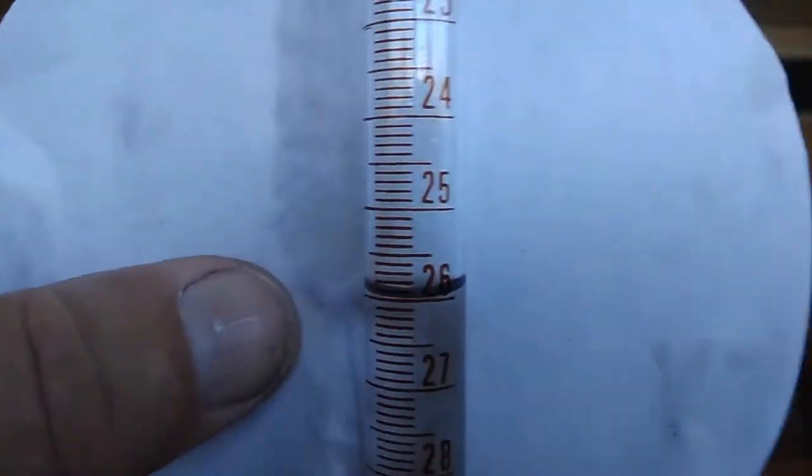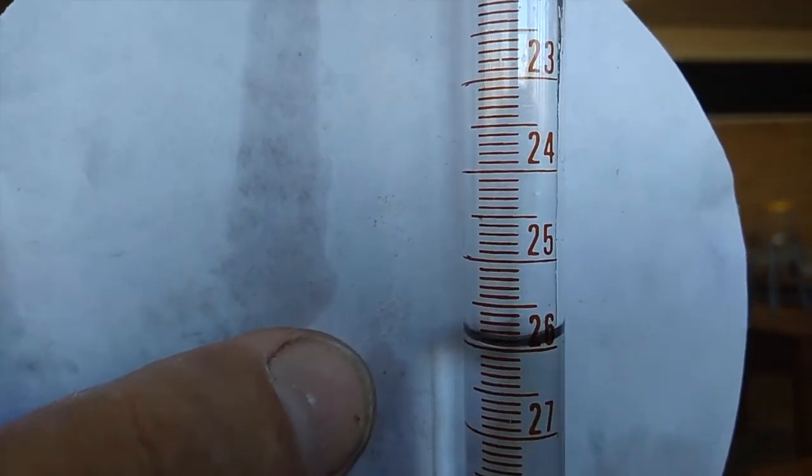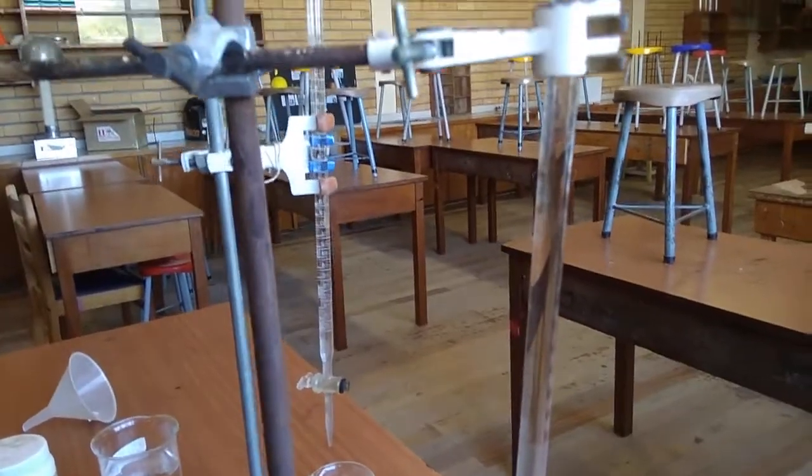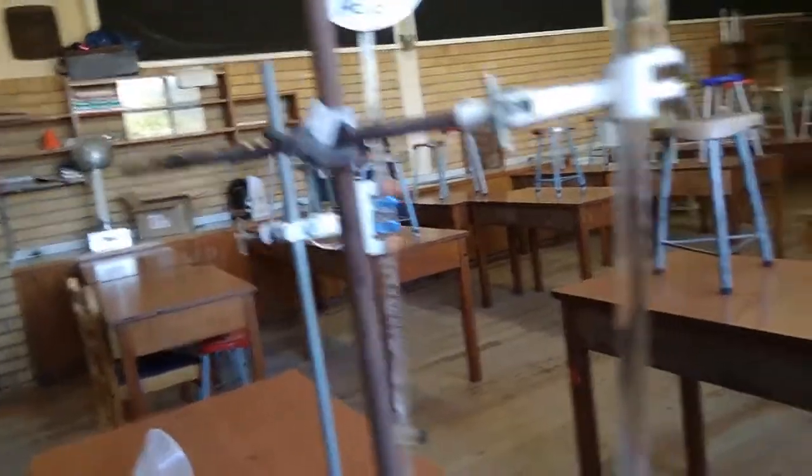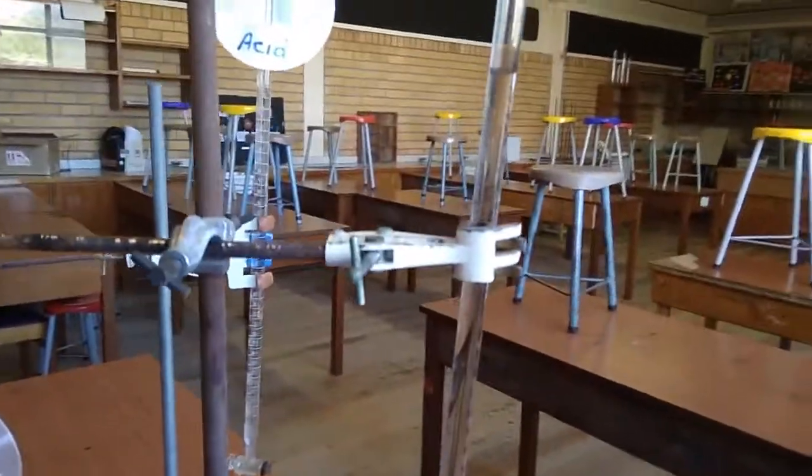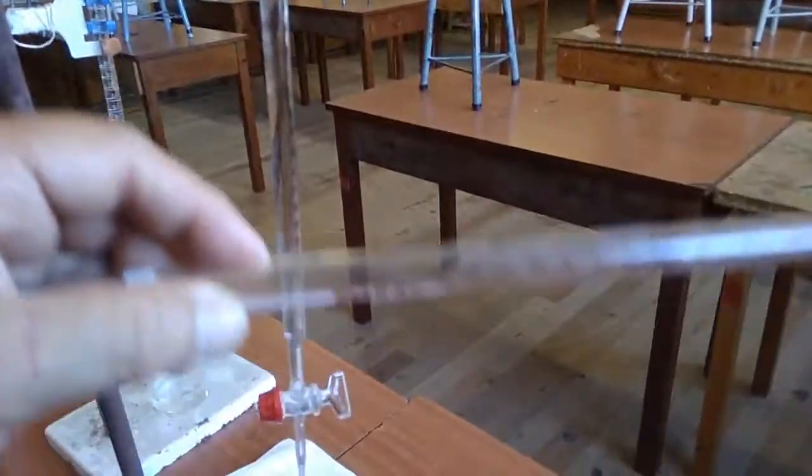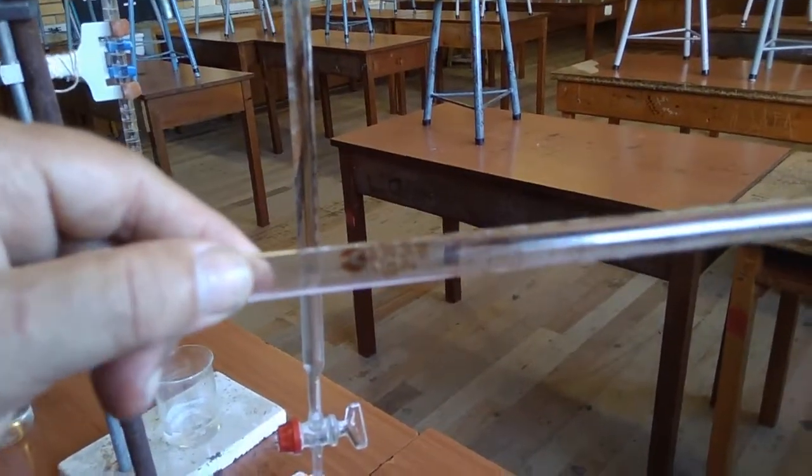Now we know we have used 26 milliliters of our sodium hydroxide, which has neutralized the 25 milliliters that we put in from our burette of oxalic acid. So we had 25 milliliters of oxalic acid and 26 milliliters of sodium hydroxide.